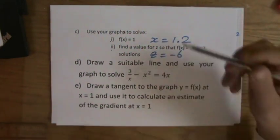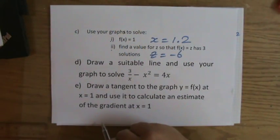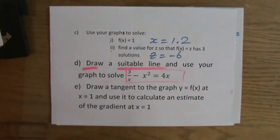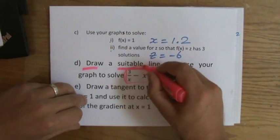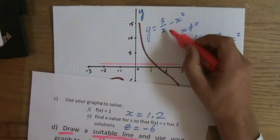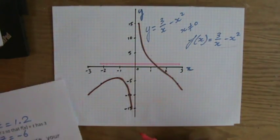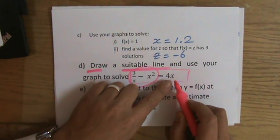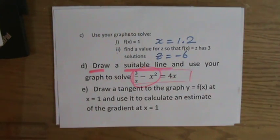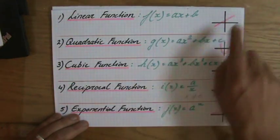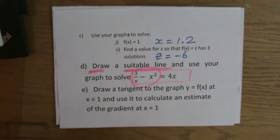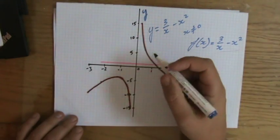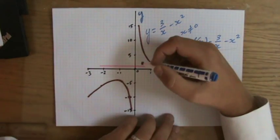Question d: draw a suitable line and use your graph to solve 3/x - x² = 4x. The left part of that equation, 3/x - x², is already my graph. So I need to find when my graph equals 4x. Since 4x is a linear function with the highest power of x being 1, that is the line I have to draw.